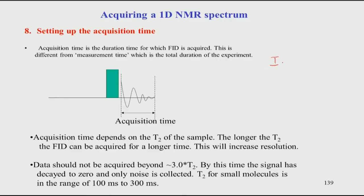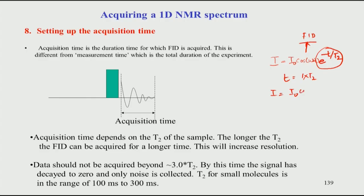This can be shown mathematically. The intensity of the FID is equal to I₀ times cosine of the frequency (the time-dependent oscillation) times e to the power of minus T divided by T2. This is the form of the FID. Looking at the exponential term, which causes the decrease in intensity with respect to time: if T equals 1×T2, then the term becomes e to the minus 1, which is 1 over e, or 1 over 2.7 — approximately 33 percent. So the signal has decayed to about 33 percent in 1×T2.